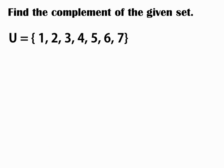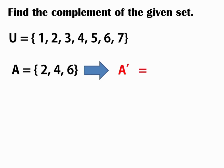Number 1: if U is equal to 1, 2, 3, 4, 5, 6, 7 and A is equal to 2, 4, 6, now we are going to find the A complement. So, what is A complement? Again, we are going to remove the elements in A that can be found in U. So, A complement is equal to 1, 3, 5, 7. Okay?